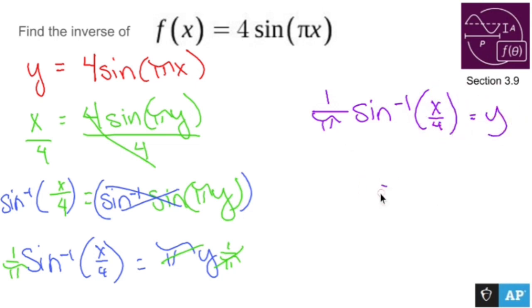Now, if we flip-flop things, so now that I have (1/π)sin^(-1)(x/4), instead of writing y on the left, I'm going to write what it's supposed to look like when finding the inverse.